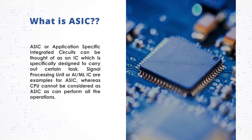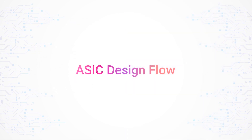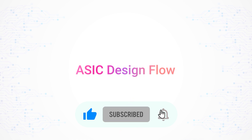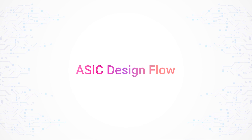Before discussing ASIC design flow, let's understand what ASIC is. ASIC, or application specific integrated circuits, can be thought of as an IC specifically designed to carry out certain tasks. Signal processing units or AI/ML ICs are examples of ASICs, whereas a CPU cannot be considered an ASIC as it can perform all operations. ASICs are extremely popular nowadays as they provide good performance compared to general purpose ICs for a specific task, but making ICs for a specific purpose increases the overall cost of design. In this video we will see the different steps involved in designing an ASIC, popularly known as the ASIC design flow — a commonly asked question in any VLSI interview.